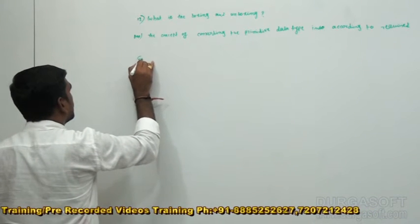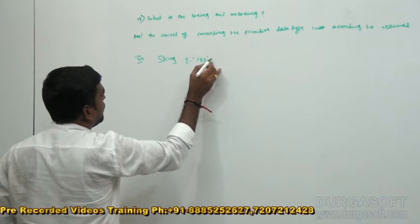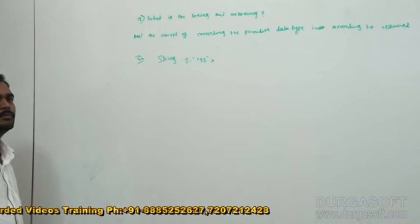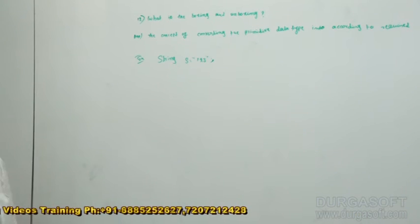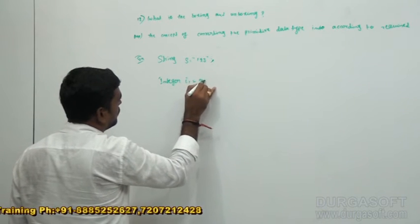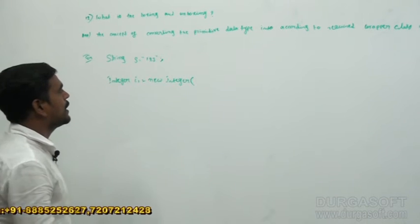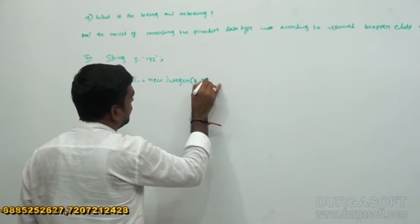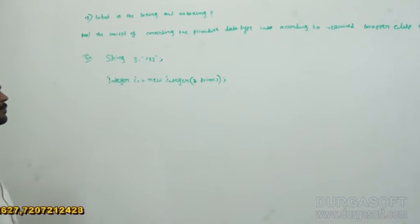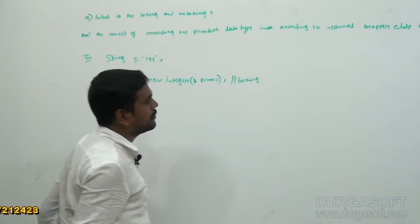For example, I am taking here one string: String s = "123". If you want to get the integer value, first of all we have to box this value. Like this: Integer i1 = new Integer(s.trim()). Trim is a method that eliminates any white spaces. This is called boxing.